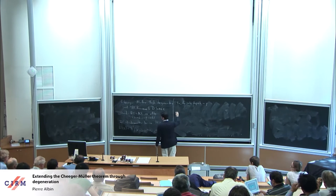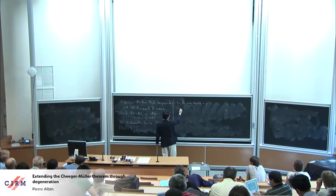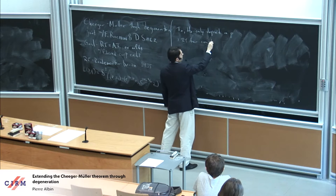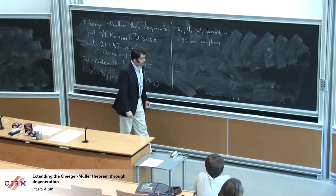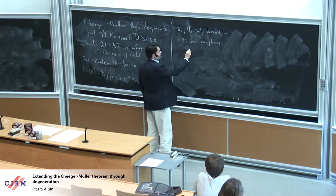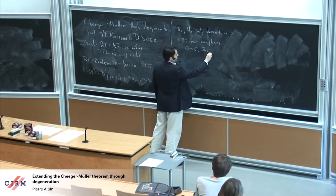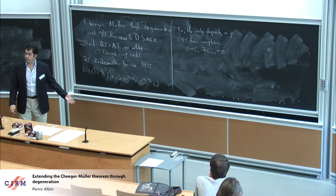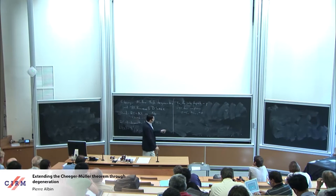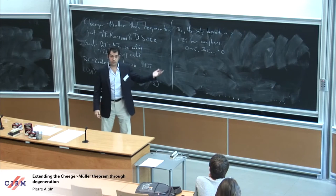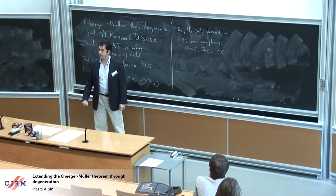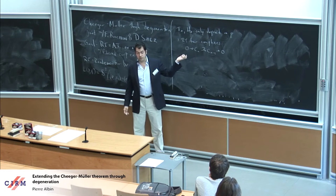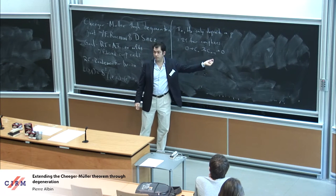Let me tell you how you define Reidemeister torsion. Following Milnor, let's talk about Reidemeister torsion for complexes. The idea is to generalize the determinant. If you start with a very simple complex with just two non-zero terms, then you have an isomorphism, and if you choose bases of Cⁿ and Cⁿ⁻¹, this map would be given by a matrix and you could take the determinant. It depends on the bases and tells you how this map changes the bases as you push it forward.